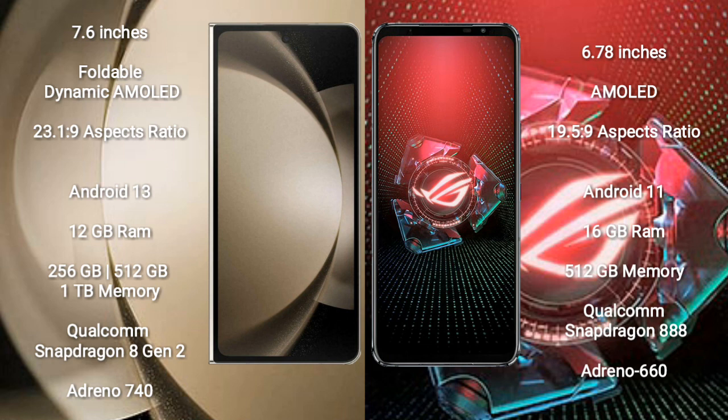Samsung Galaxy Z Fold 5 comes with 12GB RAM and 128GB, 512GB, or 1TB internal storage, powered by a Qualcomm Snapdragon 8 Gen 2 processor and Adreno 740 GPU. Asus ROG Phone 5 Pro comes with 16GB RAM and 512GB internal storage, powered by a Qualcomm Snapdragon 888 processor and Adreno 660 GPU.